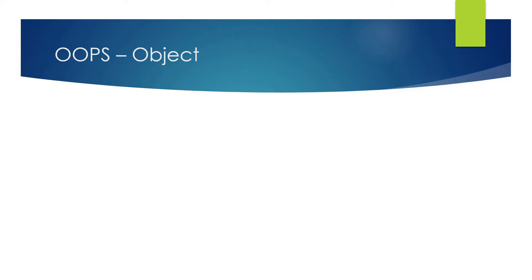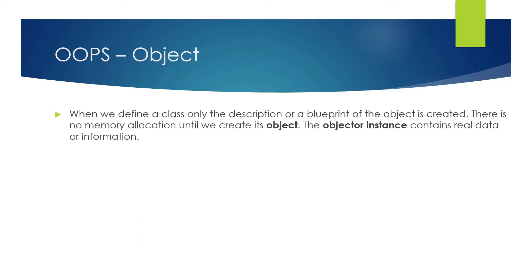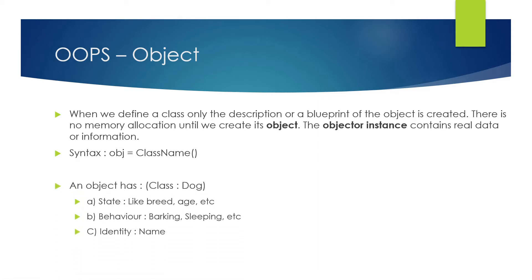Now let's talk about objects, which is very important. When we define a class, only the description or blueprint of the object is created — there is no memory allocation until we create its object. The object or instance contains the real data or information. The syntax is: give an object name like 'obj', then the class name with brackets in front of it. For example, an object has a class 'dog'.